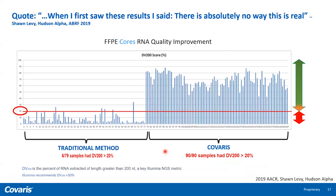Dr. Levy observed an even more significant impact with FFPE cores. Quoting Dr. Levy: 'When I first saw these results, I said there is absolutely no way this is real.' With the traditional method, only 6 out of 79 FFPE core samples had a passing DV200 of greater than 20%. With Covaris's method, a full 90 out of 90 — 100% — of these samples passed the DV200 metric of greater than 20%. With longer RNA, you can now effectively detect recurrent gene fusions, and higher quality extracted RNA translates to sequencing more samples with better RNA-seq data for faster turnaround times.